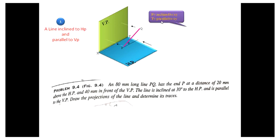Observe from this position and you get the front view on the VP plane. The front view is the true length. P-dash and Q-dash form the front view, and theta equals 30 degrees — PQ is inclined to HP at 30 degrees. Observe from the top and you get the top view on the HP plane, which is not the true length.